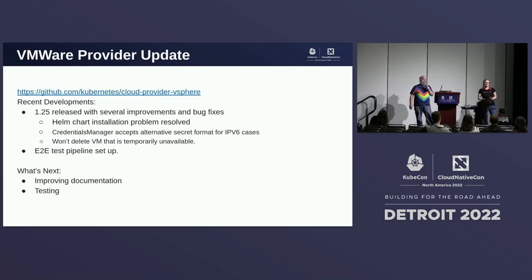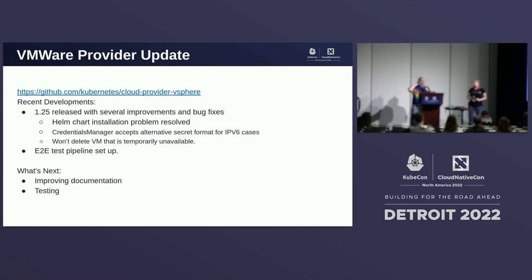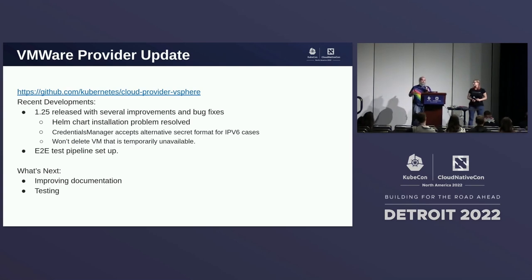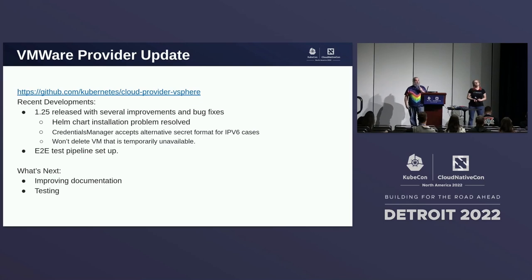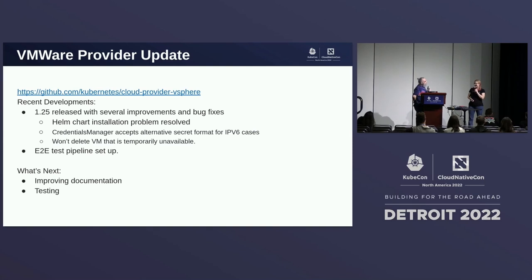And lastly, we have the VMware provider update. They've done a bunch of bug fixes for 1.25 and resolved some problems with their Helm charts, making it easier to deploy. Their credentials manager now accepts an alternate format secret for IPv6, and they won't delete a VM that is temporarily unavailable. They now have an E2E testing pipeline set up as well. Like many other providers, what's coming next is more documentation and more testing.